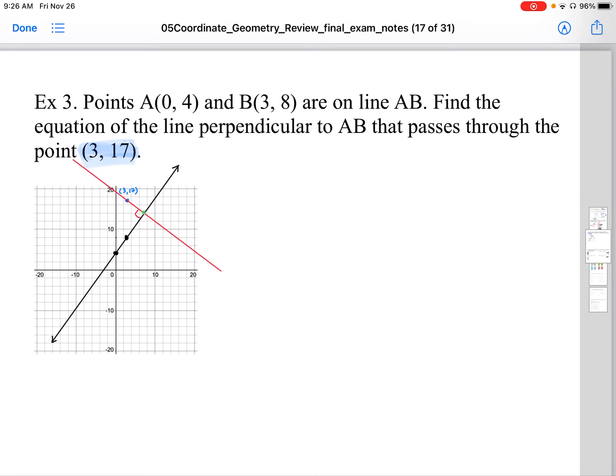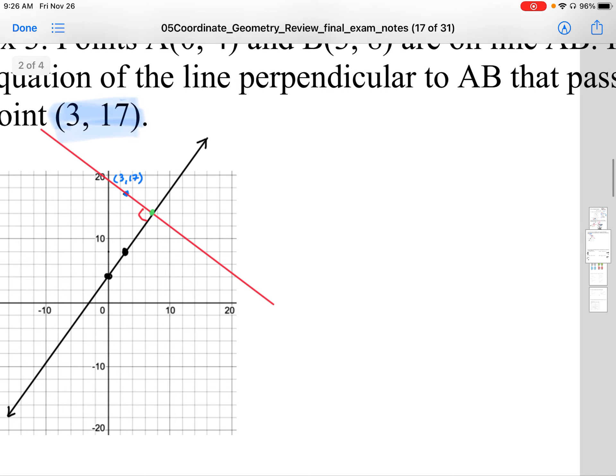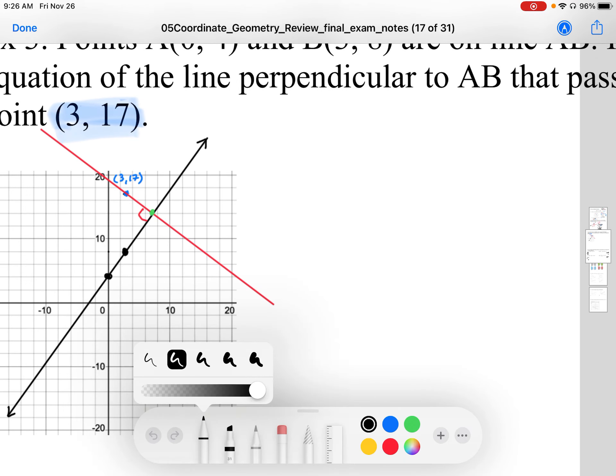So here we have points A and B at coordinates (0, 4) and (3, 8). I've drawn them here in black, so maybe I'll label these. This is point A here, and B here.